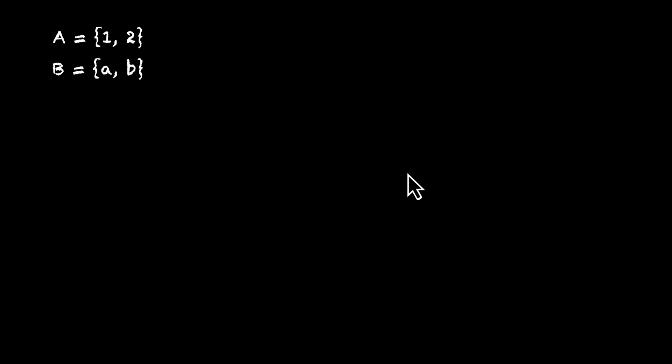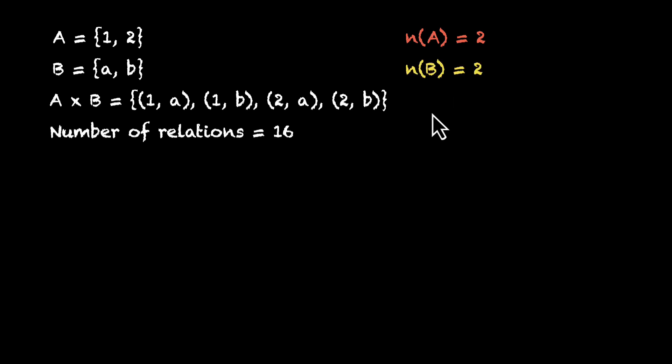We have set A, set B, and the Cartesian product of A and B. And for this arrangement, the number of relations were 16. Let's try generalizing this. Number of elements of A is 2. Number of elements of B is 2. Number of elements of A times B is 2 times 2, that's 4. And number of relations, the total possible number of relations, that's 16.